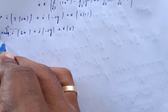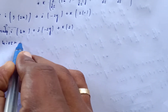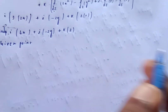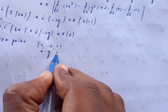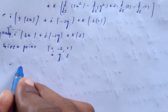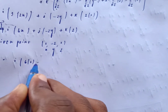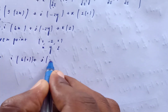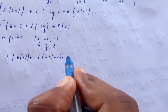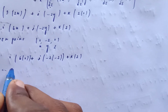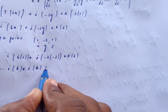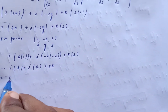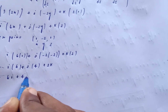Substituting the point (1, -2, 1) into grad φ: i·(6·1) + j·(-2·(-2)) + k·(2) = 6i + 4j + 2k.